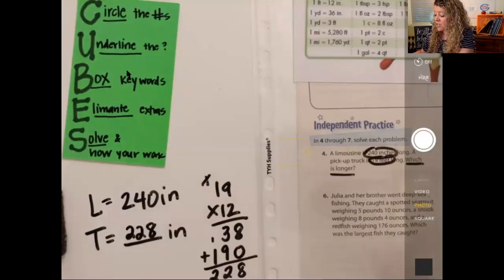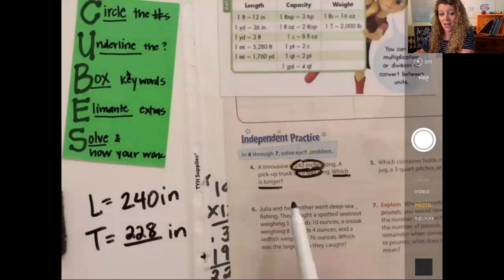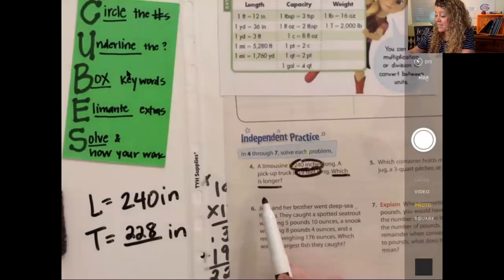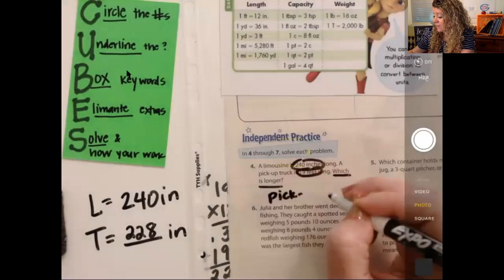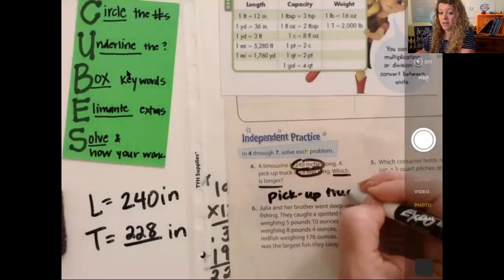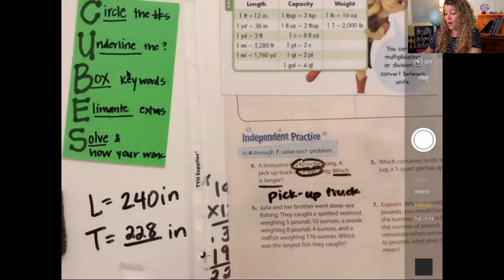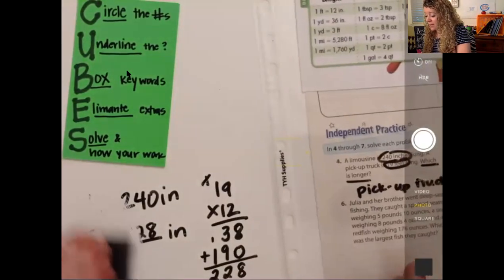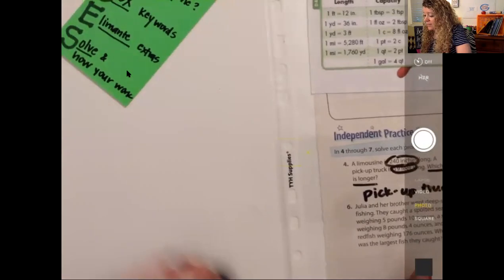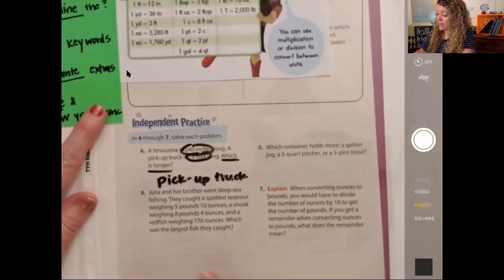So the truck that was 19 feet long is the same thing as 228 inches. So going back to our question over here, which one is longer? The answer is the pickup truck. And how do we know? Because we just showed all of our work here. For now, I want you to just leave that right there, and I'm going to show you how we're going to enter this in online in just a moment.